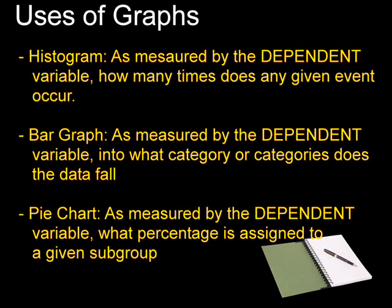Histograms are used to indicate how many times a given score appears in any given data set. When we look at the x-axis of a histogram, it's labeled with the numerical values that represent the quantitative variable.